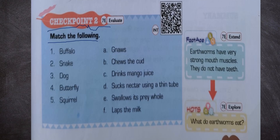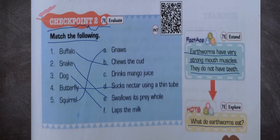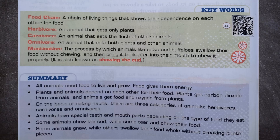Now let us see checkpoint 2 — match the following. Buffalo chews the curd. Snake swallows its prey whole. Dog laps the milk. Butterfly sucks nectar using a thin tube. Squirrel gnaws its food. Earthworms have very strong mouth muscles and do not have teeth — they eat soil and get their nutrients from soil only.